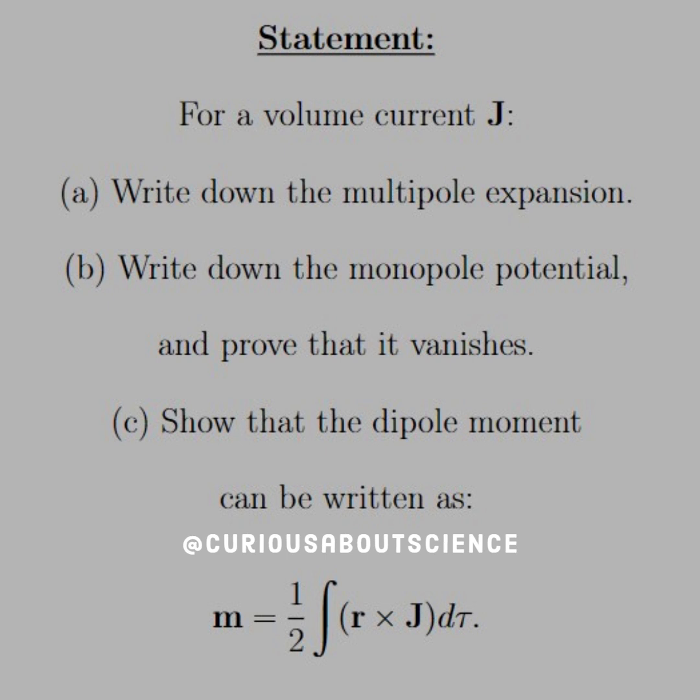For a volume current J: (a) Write down the multipole expansion. (b) Write down the monopole potential and prove that it vanishes. (c) Show that the dipole moment can be written as M equals one-half integral R cross product with J D tau.